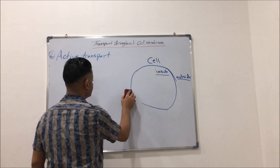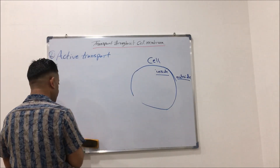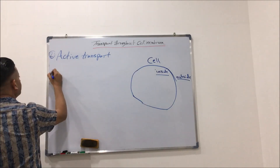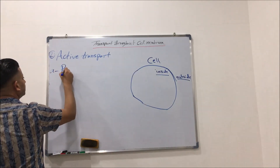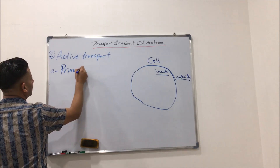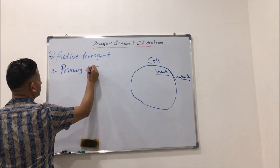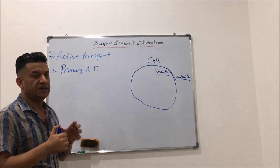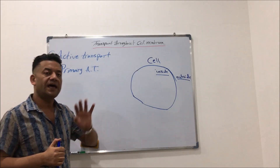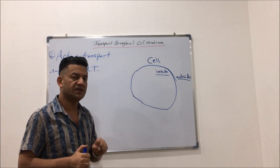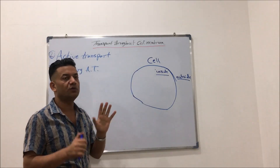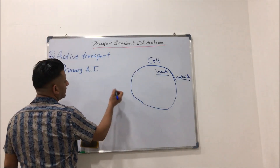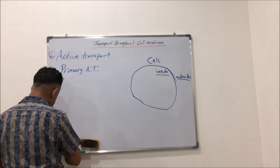The first type is the primary active transport. Primary active transport means there will be the direct consuming or expenditure of energy from the cell when it transports substances. For example, is the sodium-potassium pump.